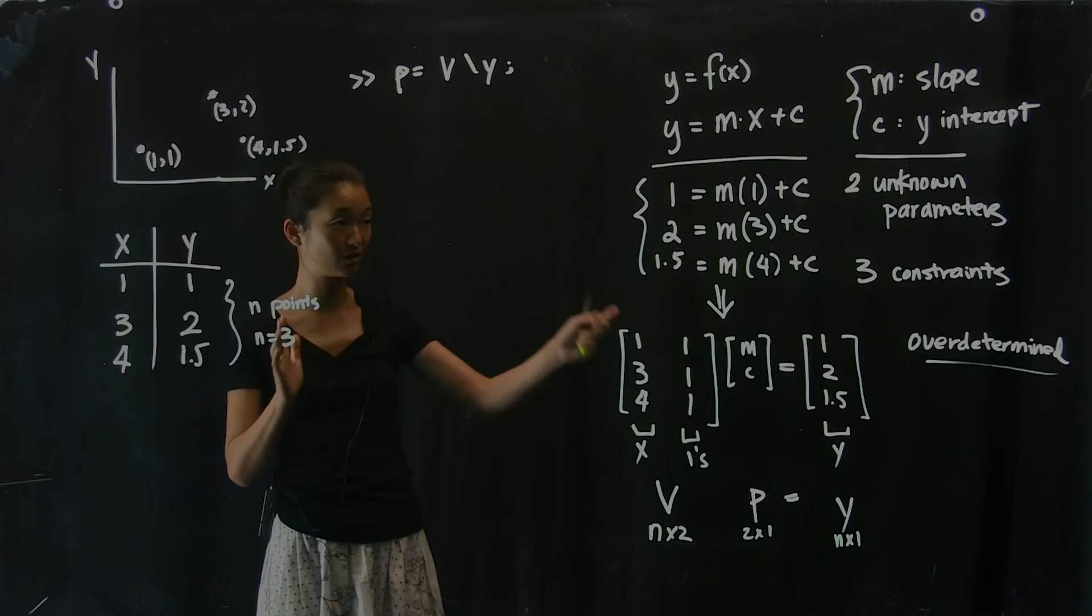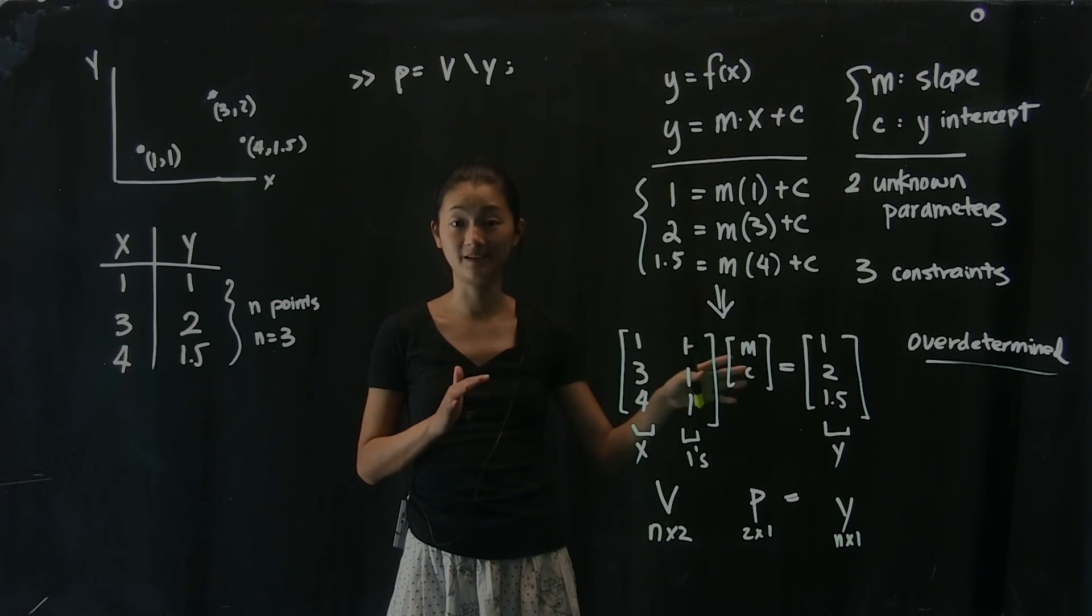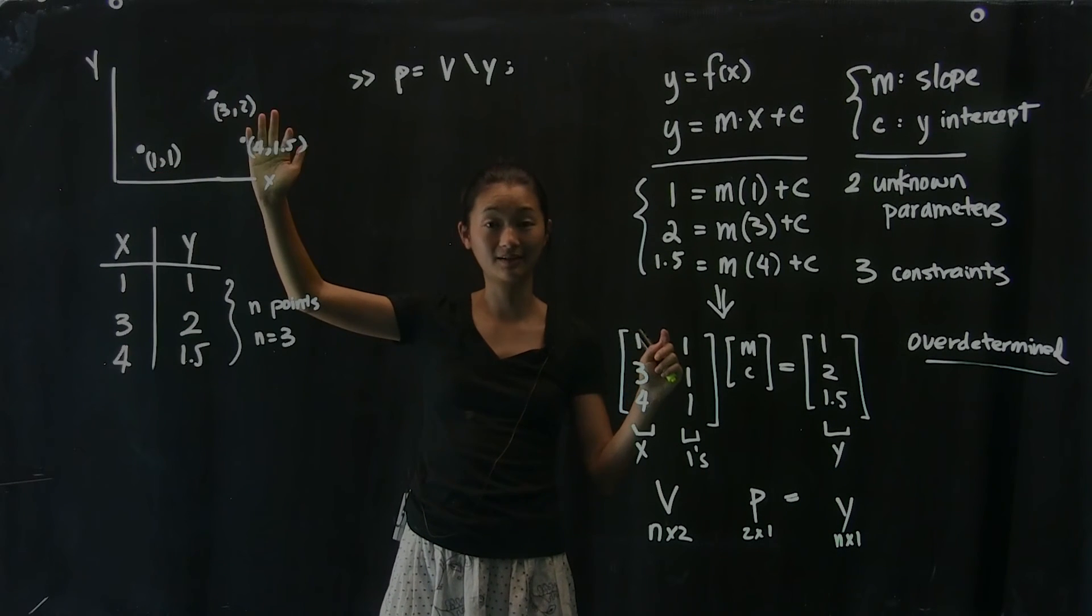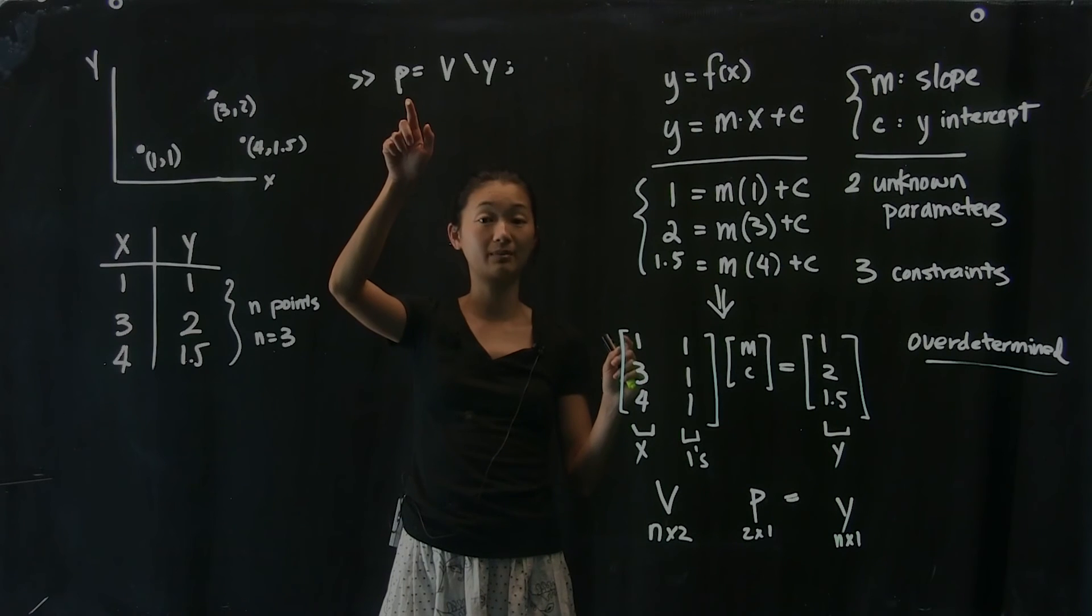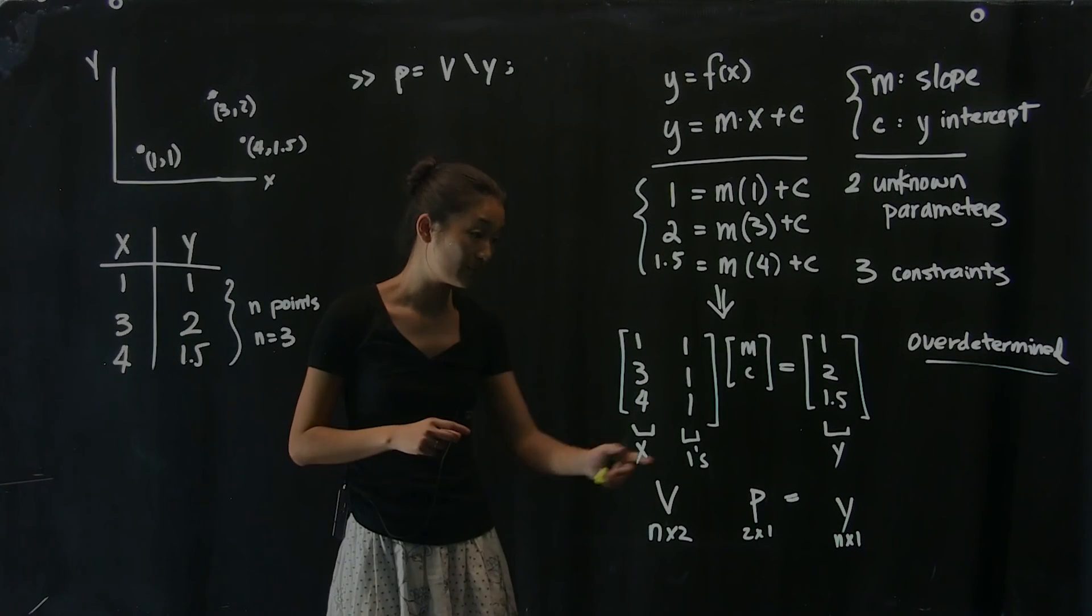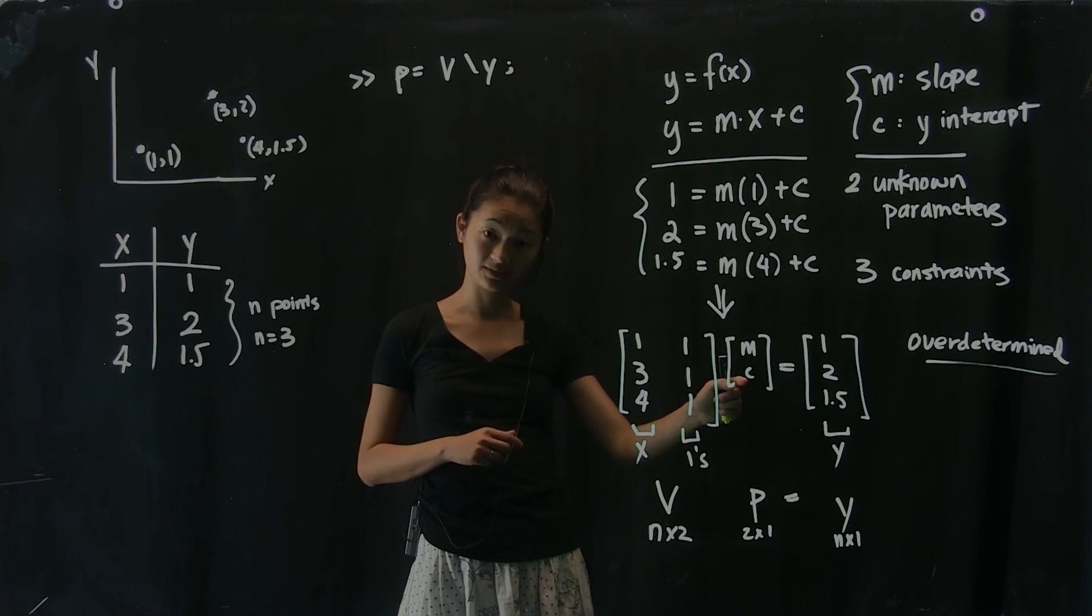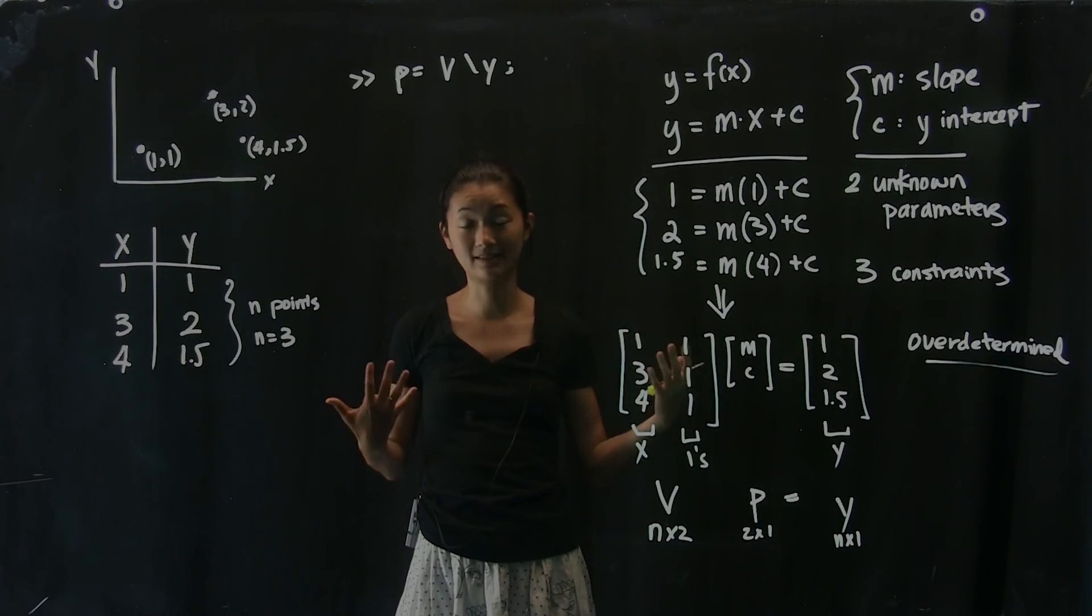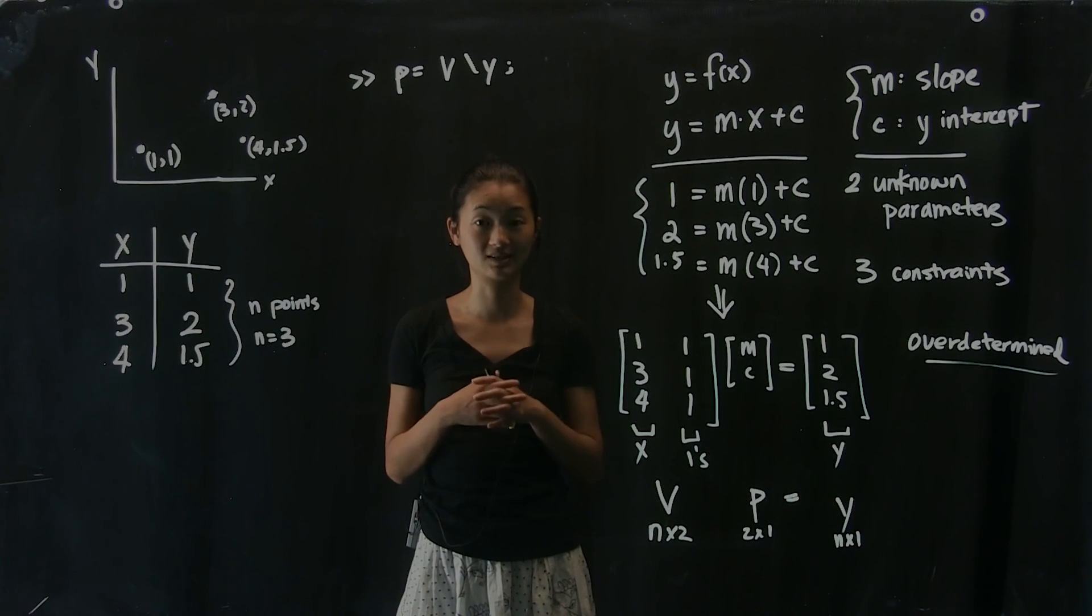And Y is going to be a n by 1 vector. And so this is the form of the system that's going to give you the best fit, the best line that goes through however many points you give it. And that line is going to be specified by the two parameters that are the solutions in P. So P, remember, is going to tell me what the slope of the line is and what the y-intercept of the line is. So what we're going to do next in the next section is actually try this in MATLAB and plug it in and see what kind of solutions we get.